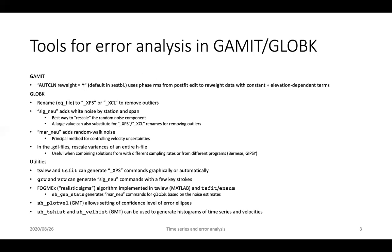The mar_neu command is the principal method for controlling those velocity uncertainties which many of you are interested in. In the .gdl files — the global directory list files where we tell GlobeK which H files to use — we can actually rescale the covariance matrix of the H file by appending numerical values to given H files in the gdl file. You can rescale the entire covariance matrix or just the diagonal component — the standard deviation component — and this might be useful when combining solutions from different programs that use a different weighting model in the phase processing.